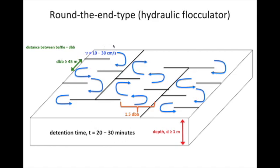So how many hydraulic flocculators do we need in a water treatment plant? Should we have only one hydraulic flocculator? The answer is no. We need at least two hydraulic flocculators.